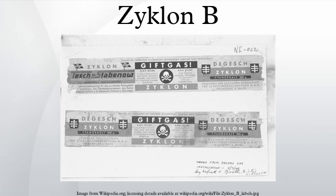cytochrome C oxidase, contains several subunits and has ligands containing iron groups. The cyanide component of Zyklon B can bind at one of these iron groups, heme A3, forming a more stabilized compound through metal-to-ligand pi bonding. As a result of this new iron-cyanide complex, the electrons which would situate themselves on the heme A3 group can no longer do so.